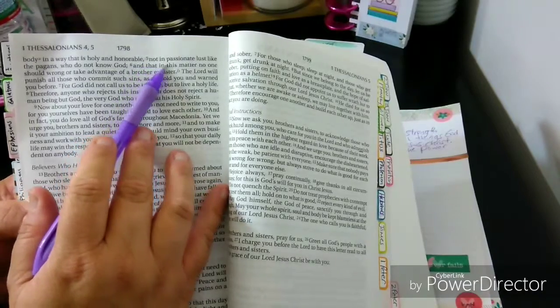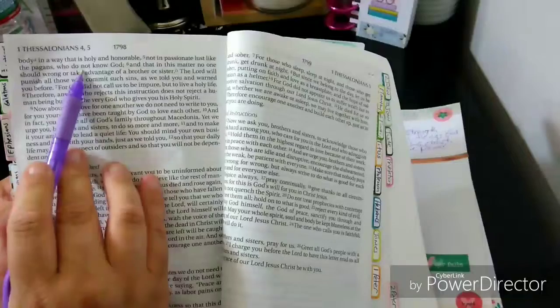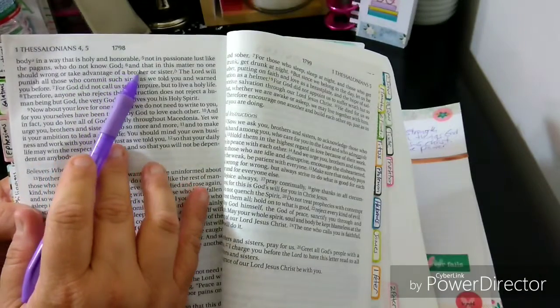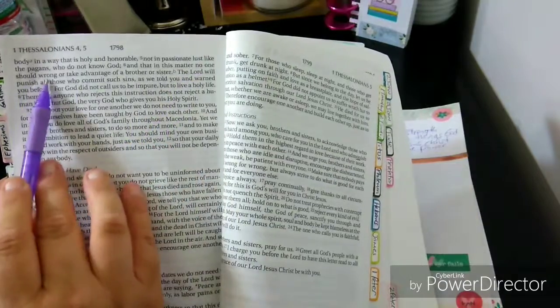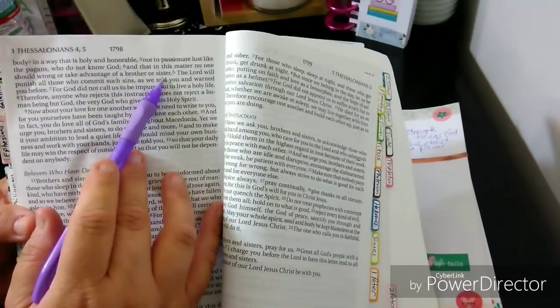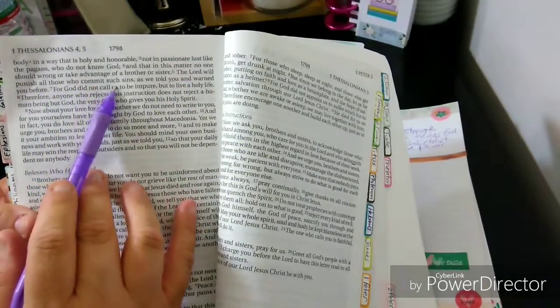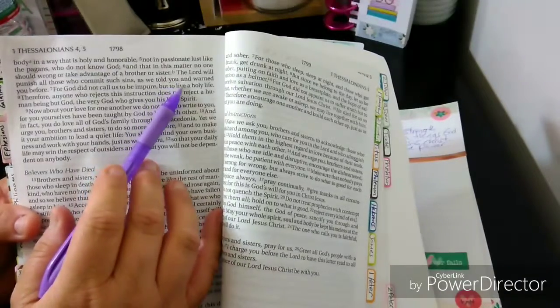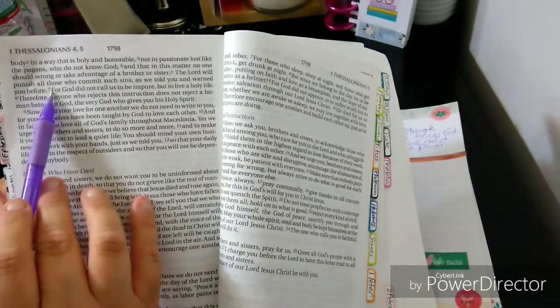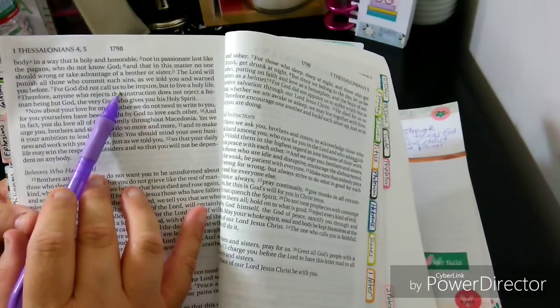Five, not in passionate lust like the pagans who do not know God. Six, and that in this matter no one should wrong or take advantage of a brother or sister. The Lord will punish all those who commit such sins as we told you and warned you before.